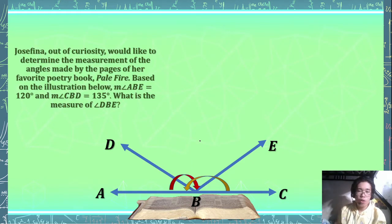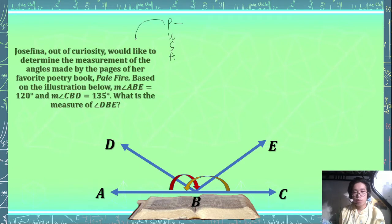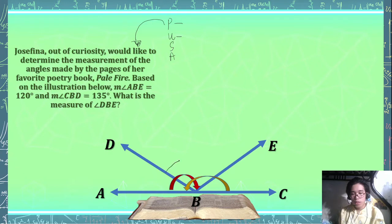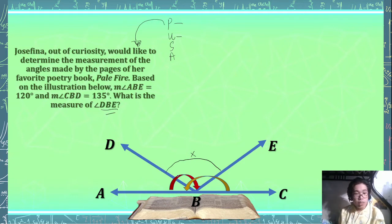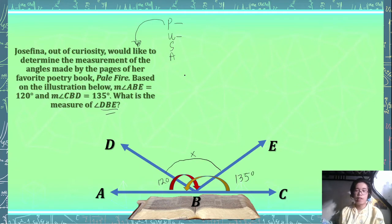Using our method — the PUSA method — we've already identified the problem. To understand what it's asking: we want to get the measurement of angle DBE, given the measurement of angle ABE equal to 120 degrees, and the measurement of angle CBD equal to 135 degrees.